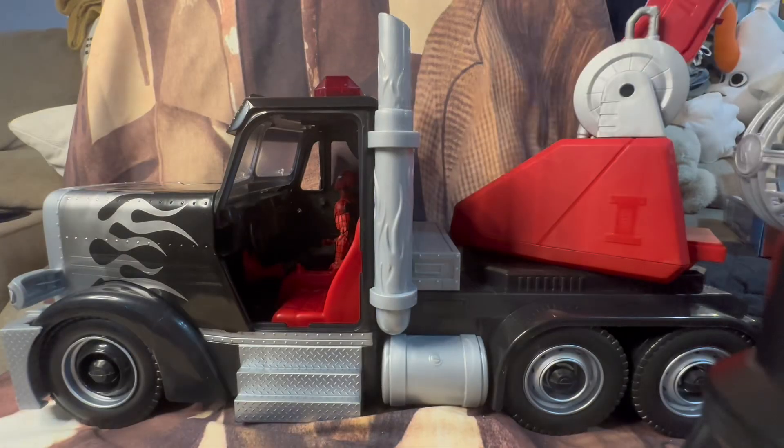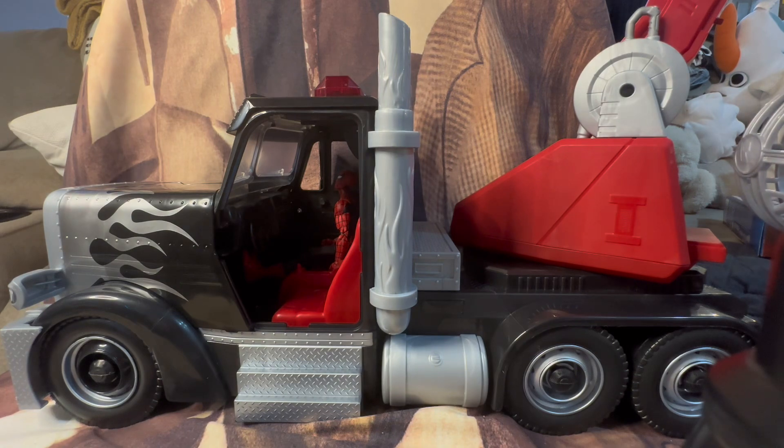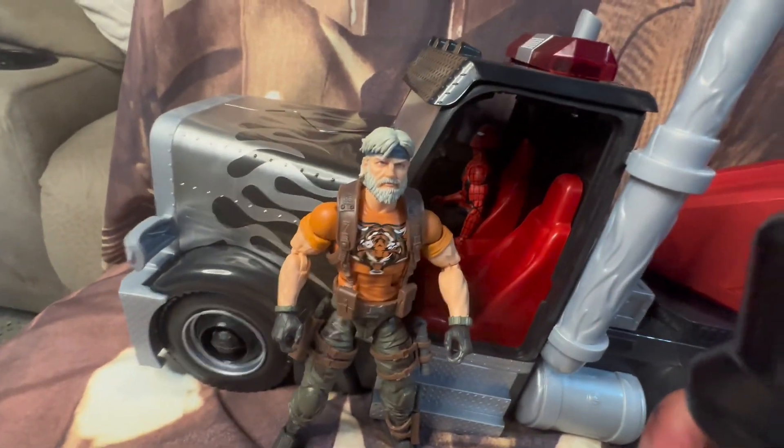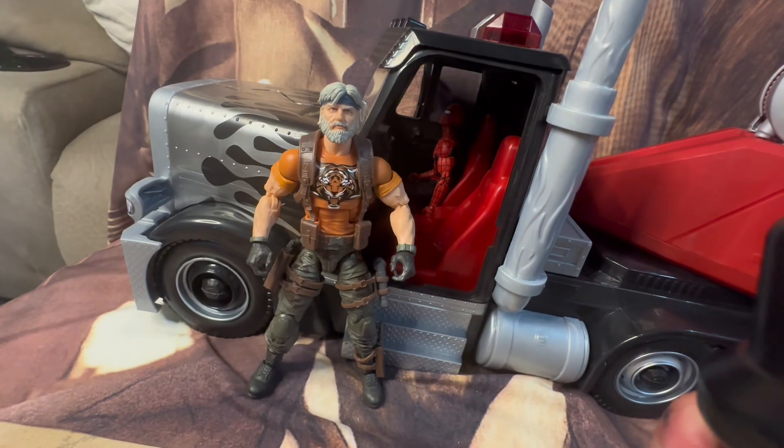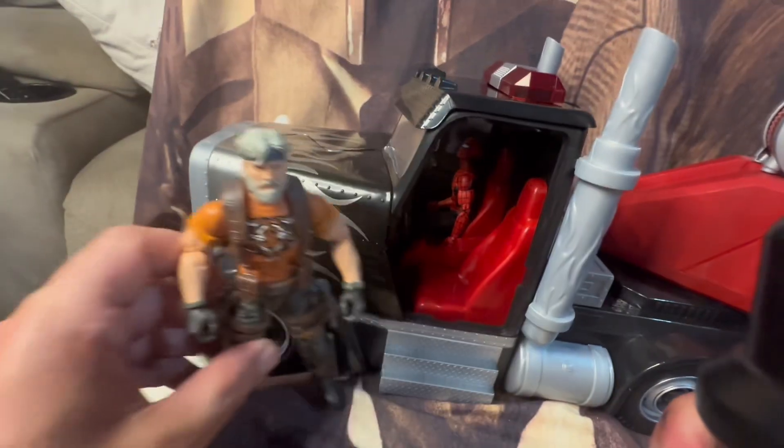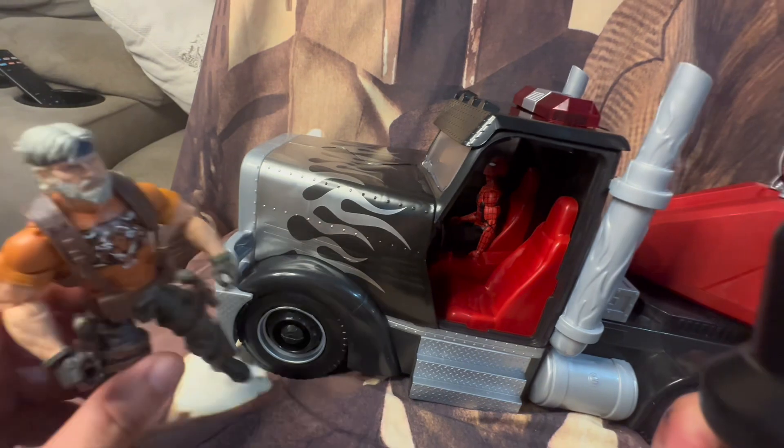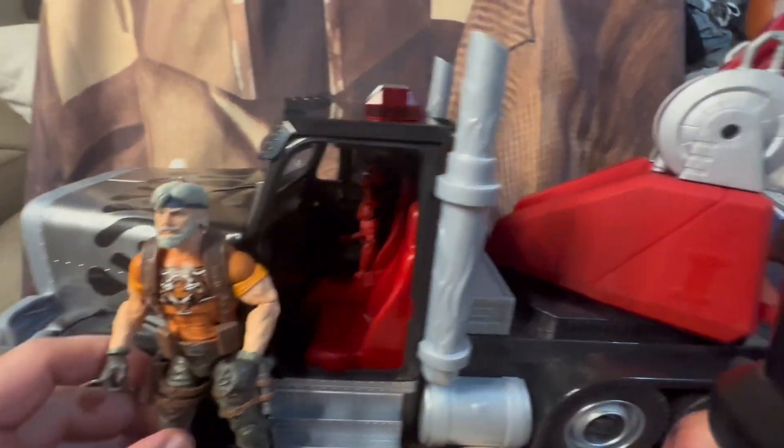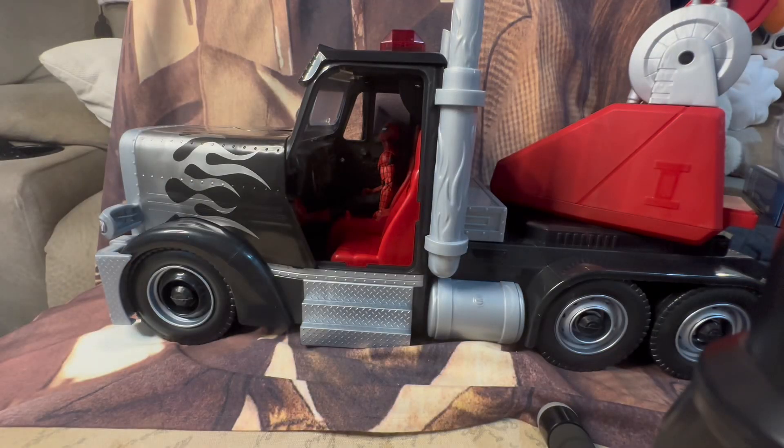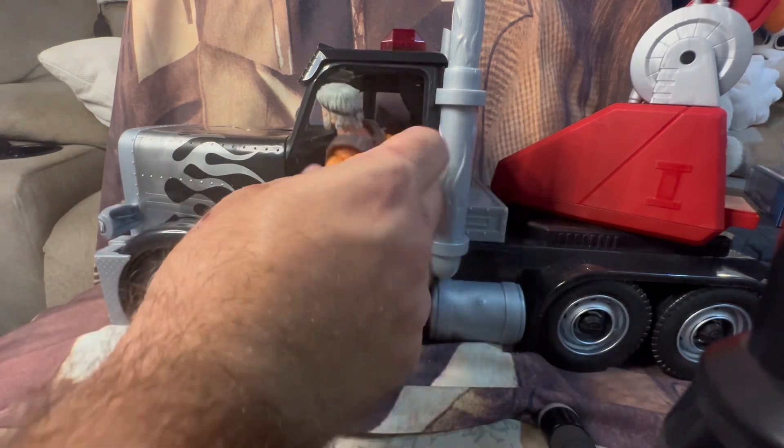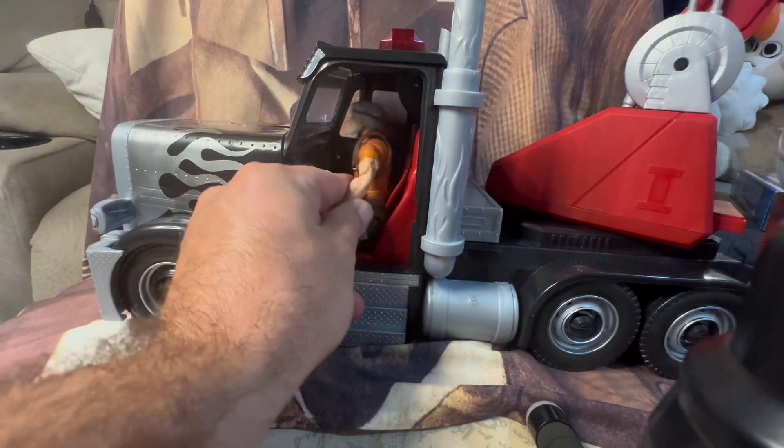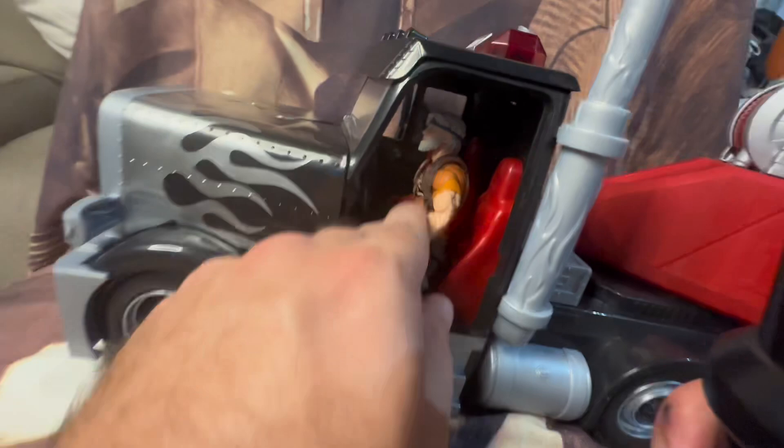Then here's how Tiger Force Outback looks like standing on the outside next to it. I mean he scales pretty well with this, just like the other figures have. I'm sure he'll look good sitting inside of it. Hell yeah, that's the best look yet.